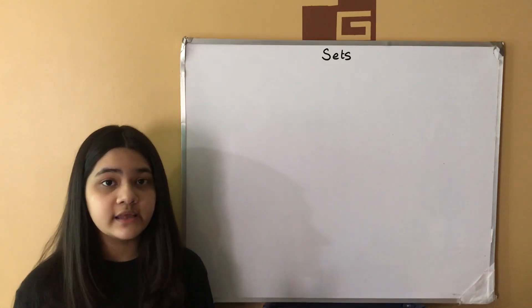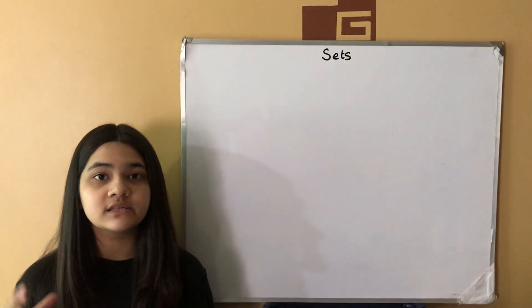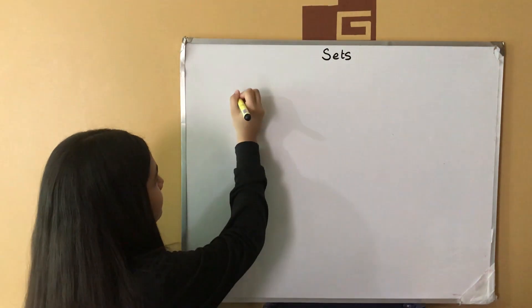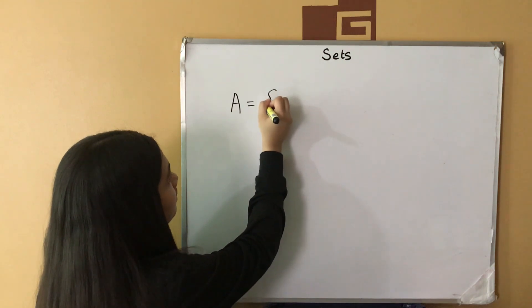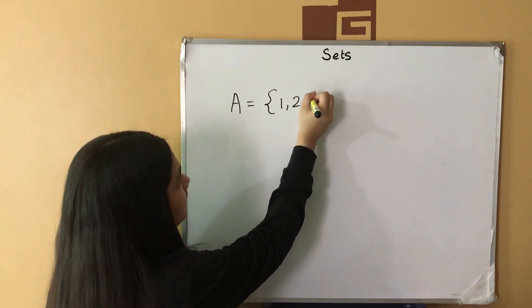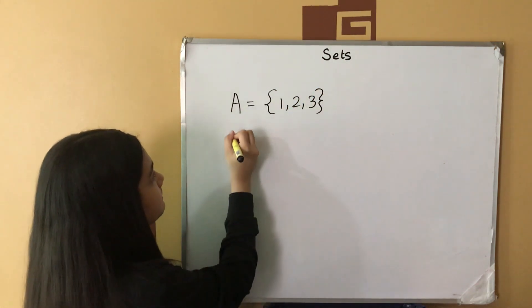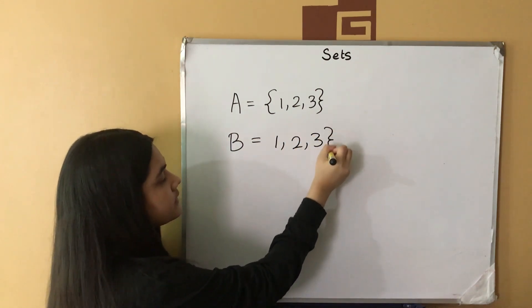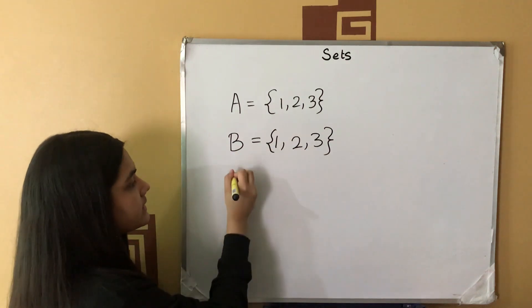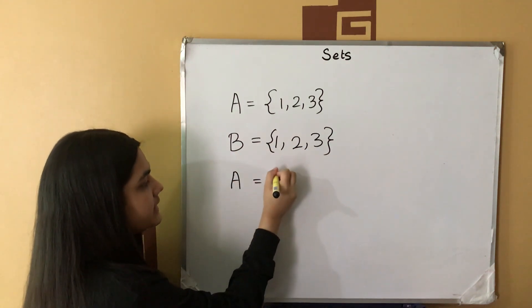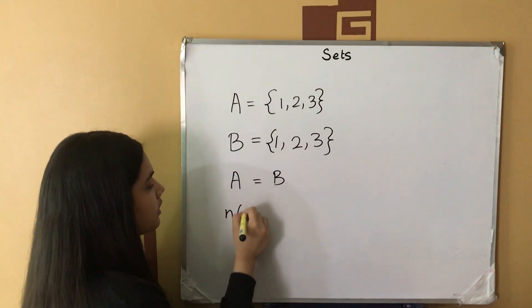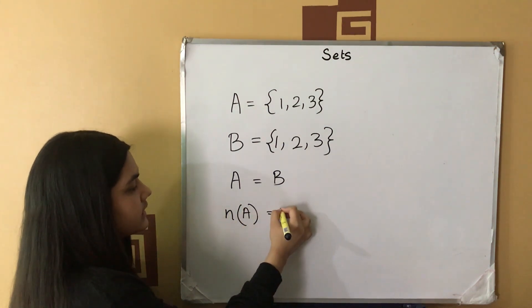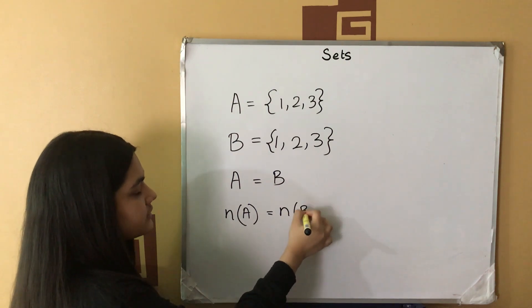Two sets are equal if and only if they contain the same exact elements. For example, set A contains the elements 1, 2 and 3. And set B also contains the elements 1, 2 and 3. Here, set A is equal to set B. As a result, number of elements in set A, the size of set A is equal to the size of set B.